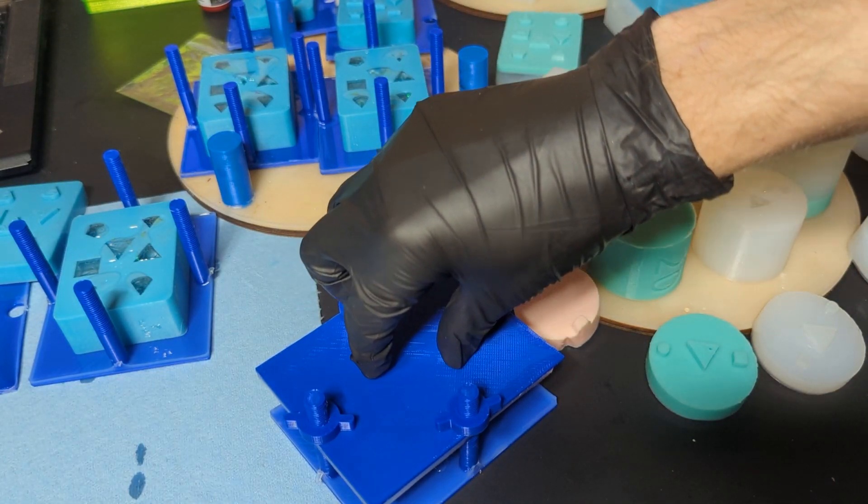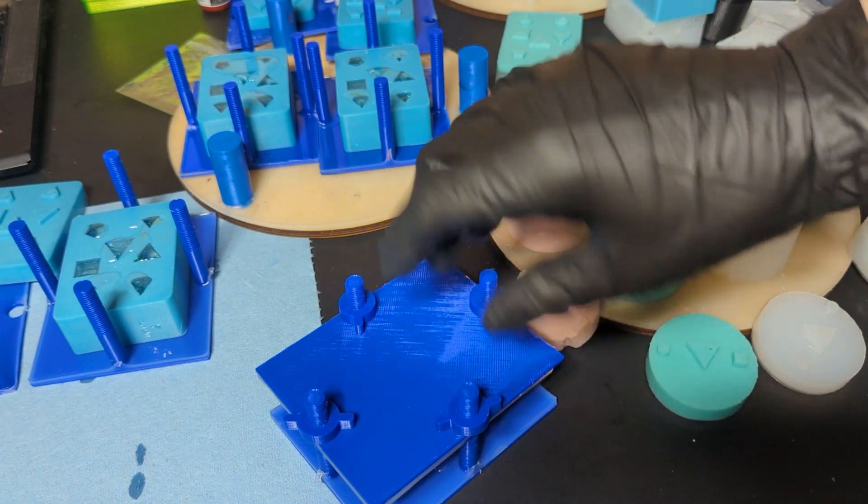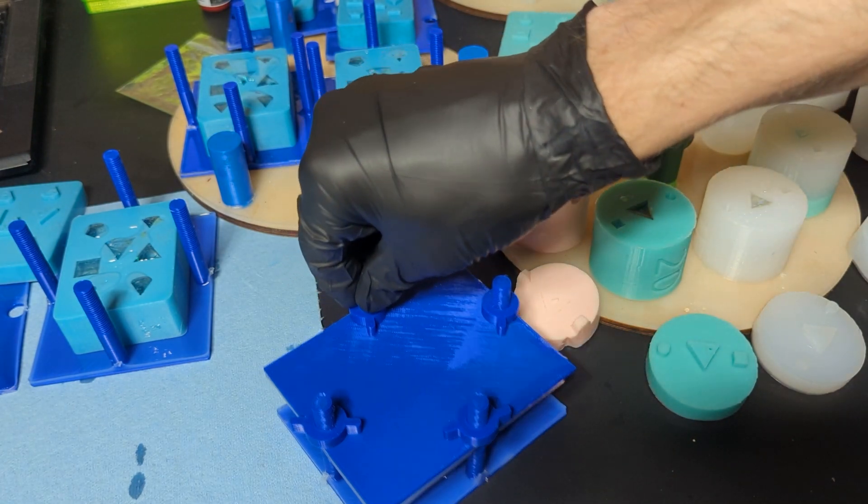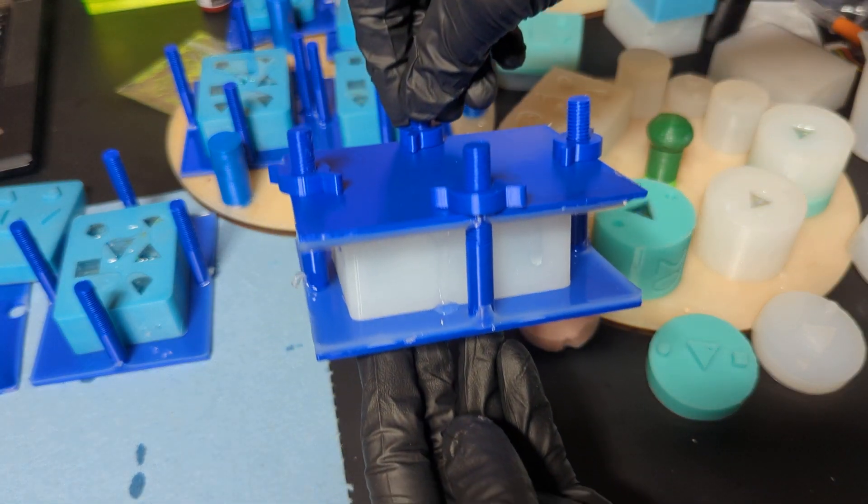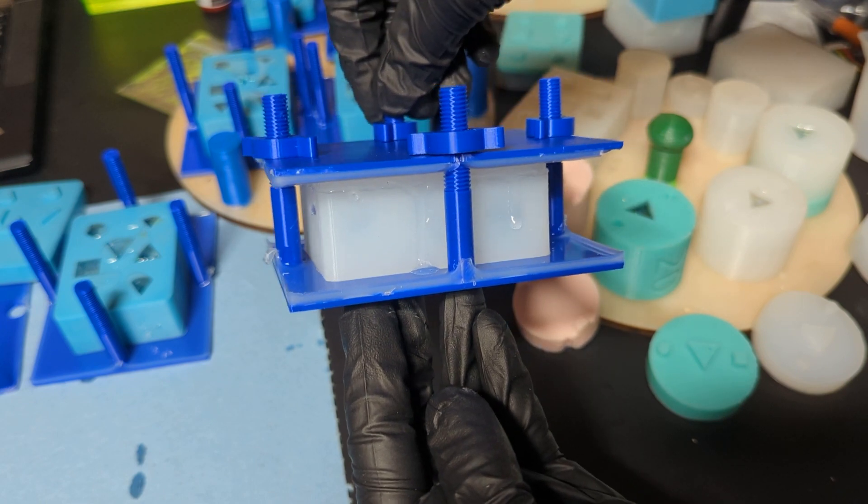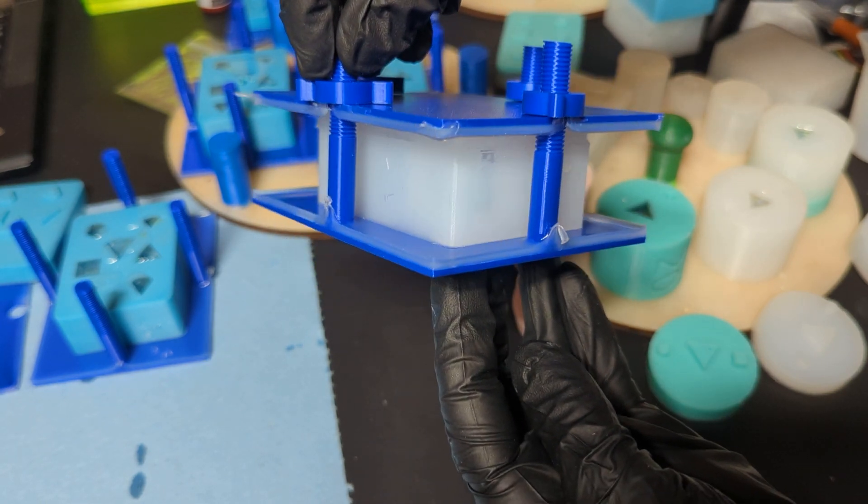See, I can still squish underneath it, but I don't want it to be squished. I want it to just be snug, holding that so there's no gaps or seams anywhere.